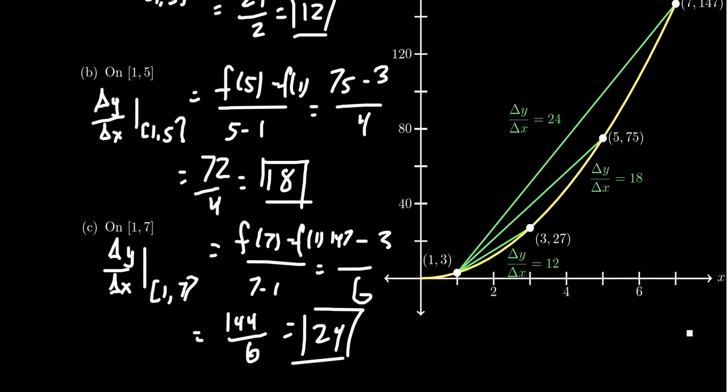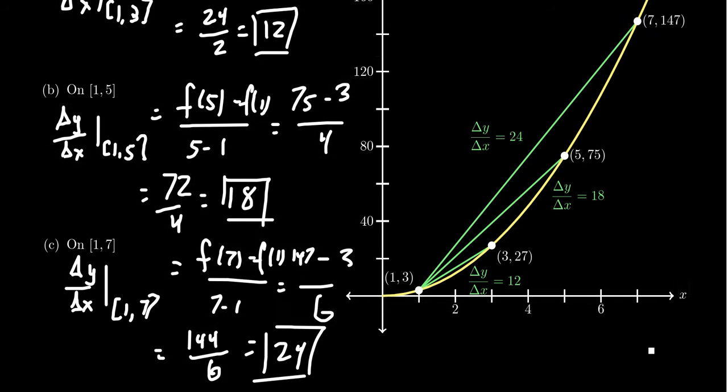And so I want you to compare these things all together. As you went from 1 to 3, the average rate was 12. As you go from 1 to 5, the average rate was 18. As you go from 1 to 7, the average rate was 24. Notice that the average rate of change as you go farther and farther from 1 is getting bigger. We'll talk about that in just a second.